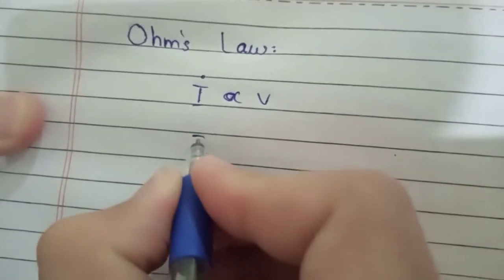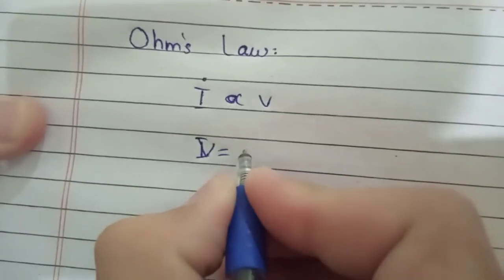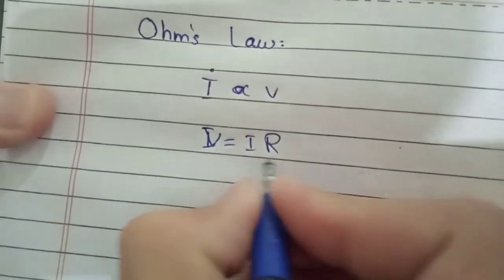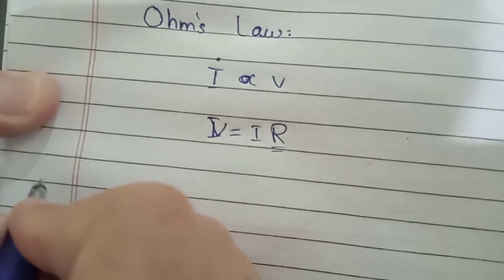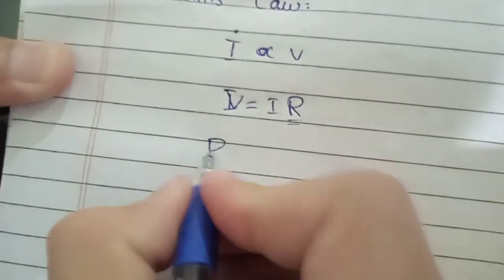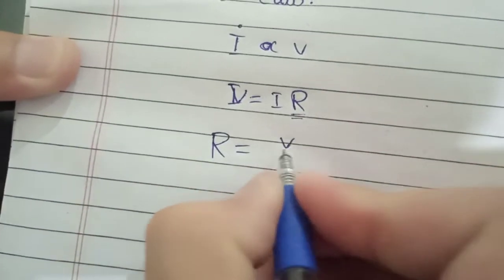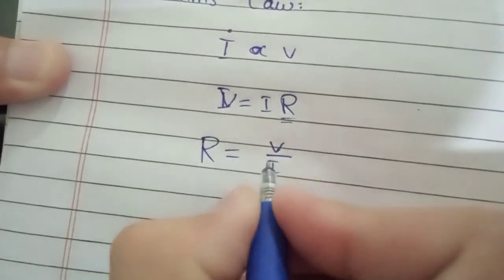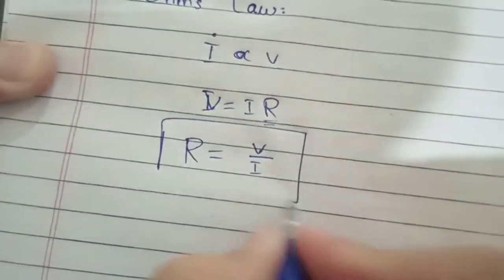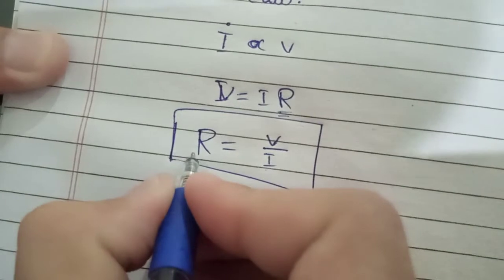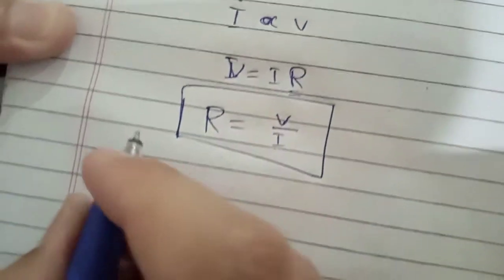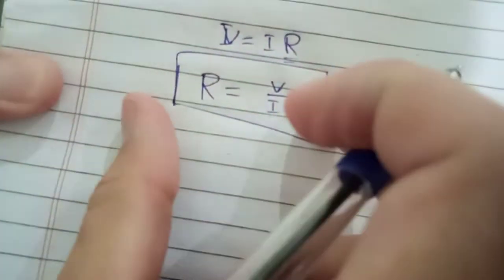Here we introduce a constant, this is the constant of proportionality known as resistance. If you want to find the resistance, we can calculate it as R equals V by I. This is the relationship between voltage and current to find out the values of R.